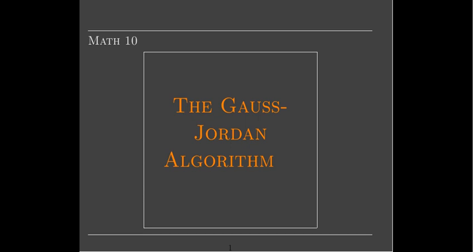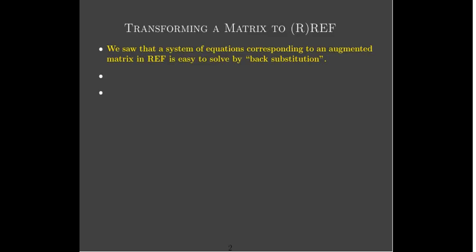In this short video we're going to describe an algorithm or procedure or systematic method for taking a general matrix and transforming it to row echelon form or reduced row echelon form. The idea is that if we have a system of equations which corresponds to an augmented matrix in row echelon form, it is easy to solve by back substitution. But in general your augmented matrix has just a general rectangular shape and it doesn't have any row echelon form.